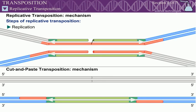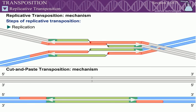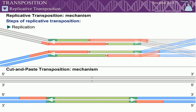In the process of moving, replicative transposition often rearranges the flanking chromosomal sequences. For some transposons, site-specific recombination occurs between the two transposons, resolving these rearrangements.